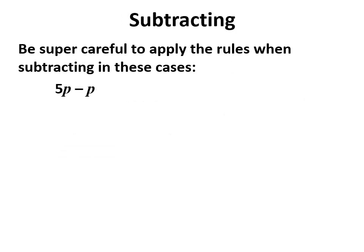Really careful when subtracting to obey the rules exactly. We're not taking away the p from 5p. We've got 5p's and we're taking away 1 of them, which leaves us with 4 of them. We have 8x squareds, we're taking away 1x squared, which leaves us with 7 of them.